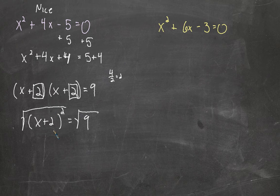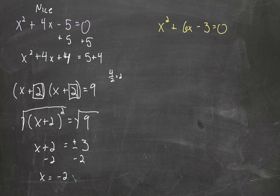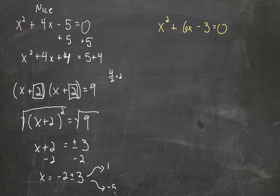We take the square root of both sides. The square root of something squared is just itself. Remember, when we take the square root of a number while solving an equation, we want to include plus or minus the square root — plus or minus 3. Then we subtract 2 from both sides: negative 2 plus or minus 3. That means negative 2 plus 3 and negative 2 minus 3, those are my two solutions: x equals 1 or x equals negative 5.